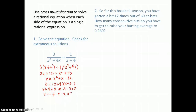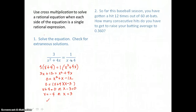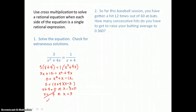Now I have to remember to check for extraneous solutions because the original equation has variables in the denominators, and we can't divide by 0. When I check negative 4, I see that negative 4 plus 4 gives me 0 in the denominator — so negative 4 is an extraneous solution. When I check 3, I get a denominator of 7 on the right and 21 on the left. So 3 checks and is a good solution.